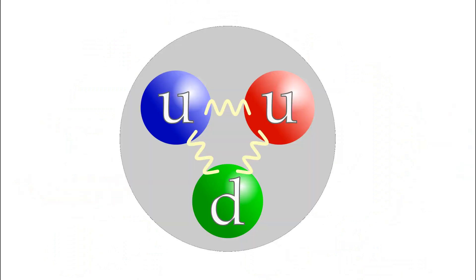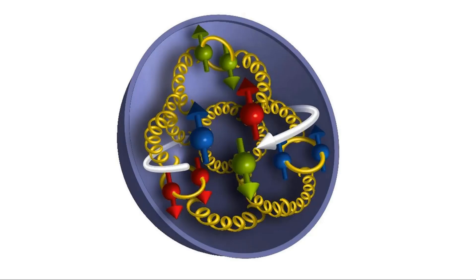Valence quarks are quarks that determine the most important properties of a hadron, such as mass, momentum, electric charge and spin. However, this is only a simplified approximation.